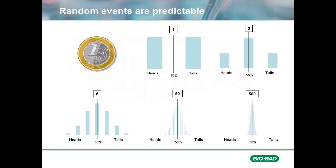If this event is only analyzed once, there is a 100% chance that the coin will land on either heads or tails. As the number of tosses are increased, the distribution becomes heavily weighted towards the center, or the 50% mark. When using Droplet Digital PCR, we typically analyze over 10,000 events, which in our case are droplets, to see what the distribution patterns look like.